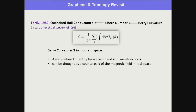Summarizing what Liang and Feng told us: it's a remarkable idea from 1982 by TKNN, only two years after the discovery of the integer quantum Hall effect. They showed the deep connection between the quantized Hall conductance and the Berry curvature. They realized that magnetic fields may not be essential — what's essential is the Berry curvature. You can calculate a Chern number, a topological number, from the Berry curvature, which determines the quantized Hall conductance.